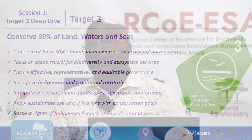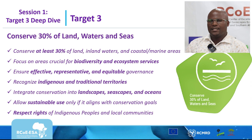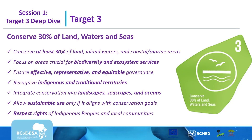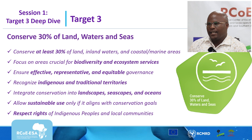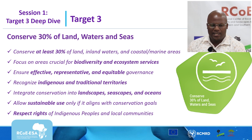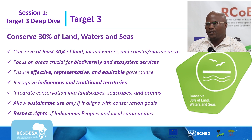So what is target 3? Target 3 aims at conserving 30% of inland waters and terrestrial ecosystems and 30% of marine, sea, and coastal ecosystems. This target focuses on areas of crucial biodiversity and ecosystem services, and aims at ensuring recognition of indigenous and traditional territories, integrating landscapes and oceans in conservation, and allowing sustainable use of biological resources while respecting the rights of indigenous people and local communities.